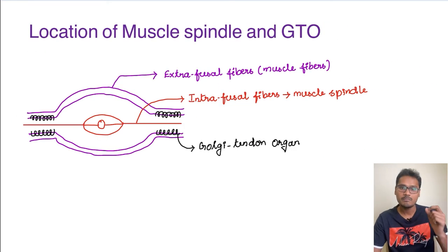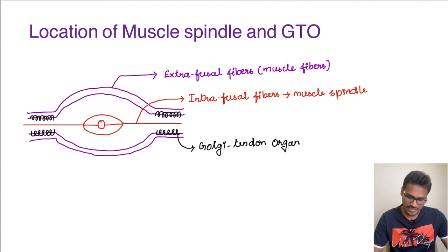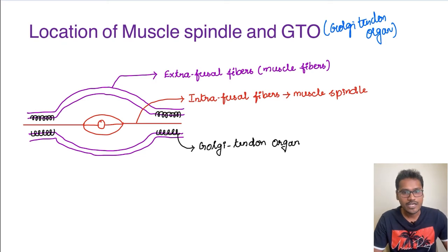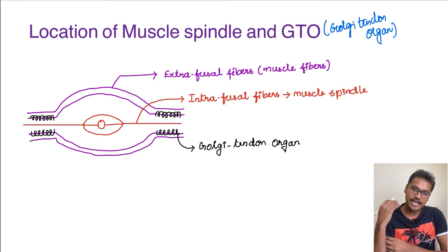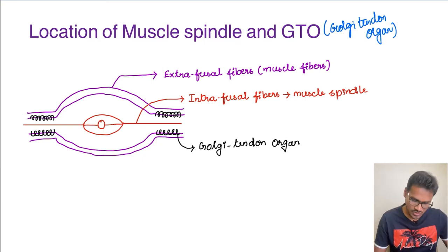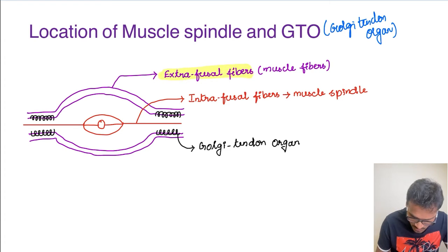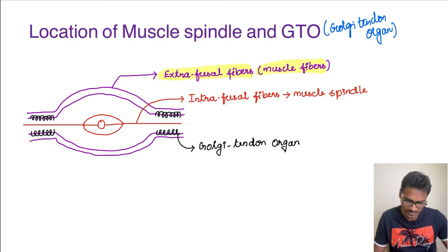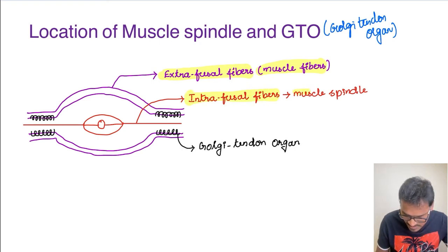What is the location of a muscle spindle and the Golgi tendon organ? Whenever we talk about a muscle fiber, there is a group of muscle helping in the actual contraction, and inside the muscle there are some receptors located deep inside called proprioceptors. The muscle fibers actually contracting the muscle are the extrafusal fibers, and deep inside, parallel to the extrafusal fiber, is the intrafusal fiber — this is our muscle spindle.